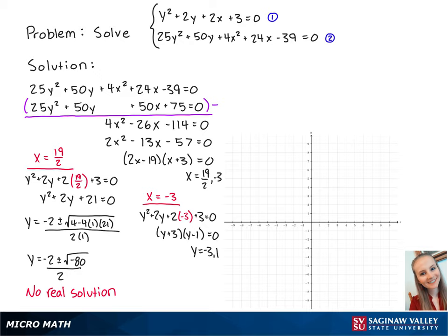Now that we have our x and y values, we can see that the intersecting points are at (-3, -3) and (-3, 1). And this is the solution to the problem.